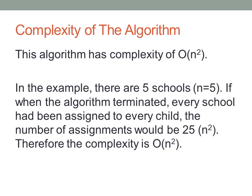The complexity of this algorithm is O(n²). We can see this from the example — there are five schools, so n equals 5. If throughout the algorithm every school is assigned to a child, unassigned, and then reassigned to a new child multiple times, such that when the algorithm terminates every school had been assigned to every child, the number of assignments would be 25. This is the maximum number possible, and therefore the complexity is O(n²).